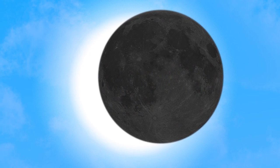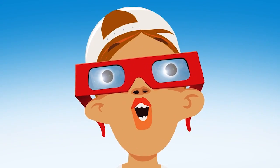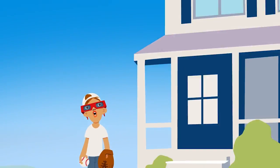Total solar eclipses occur when the Moon passes directly between the Earth and the Sun, blocking solar light. They're exceedingly rare.